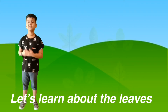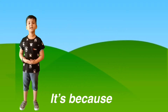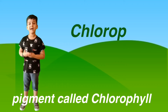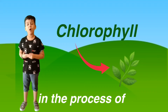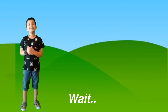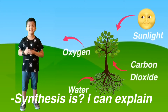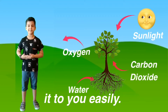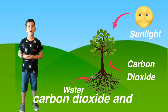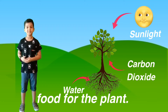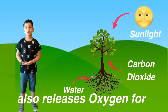Let's learn about the leaves first. Have you ever wondered why leaves are mostly green in color? It's because of a green pigment called chlorophyll found inside the leaves of a plant. Chlorophyll also helps in the process of photosynthesis. It's a process in which leaves use sunlight, water and carbon dioxide to prepare food for the plant. In this process, plants also release oxygen for us to breed.